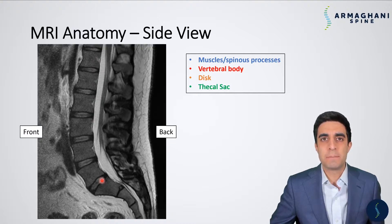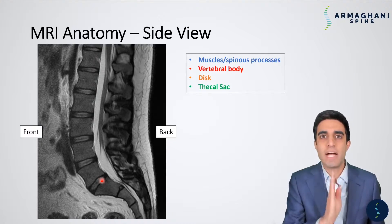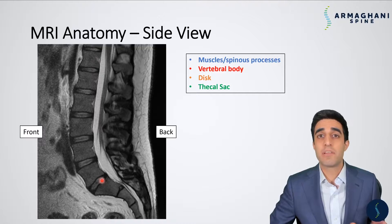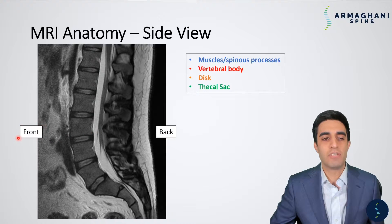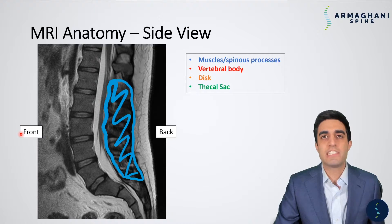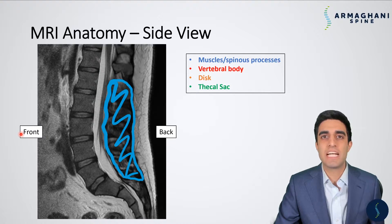An MRI basically takes slices of your body, and this particular slice goes right down the middle of your body, so there isn't really a left or a right. The skin of your back is going to be over here on the right side of the screen, and the front of your body is going to be over here on the left. The muscles and spinous processes are highlighted here in blue — these are the bones you can feel when touching your lower back, and the dark spaces in between are the muscles and ligaments that connect the bones.